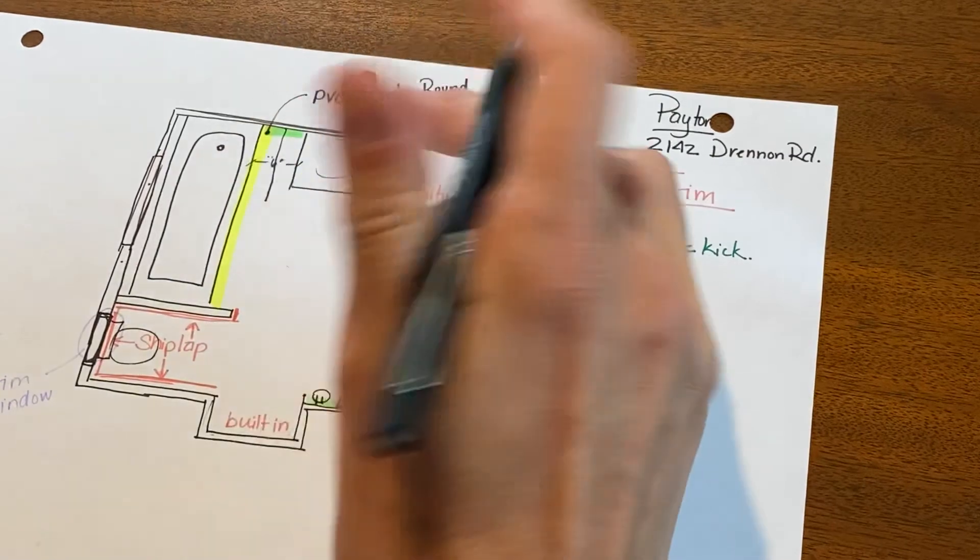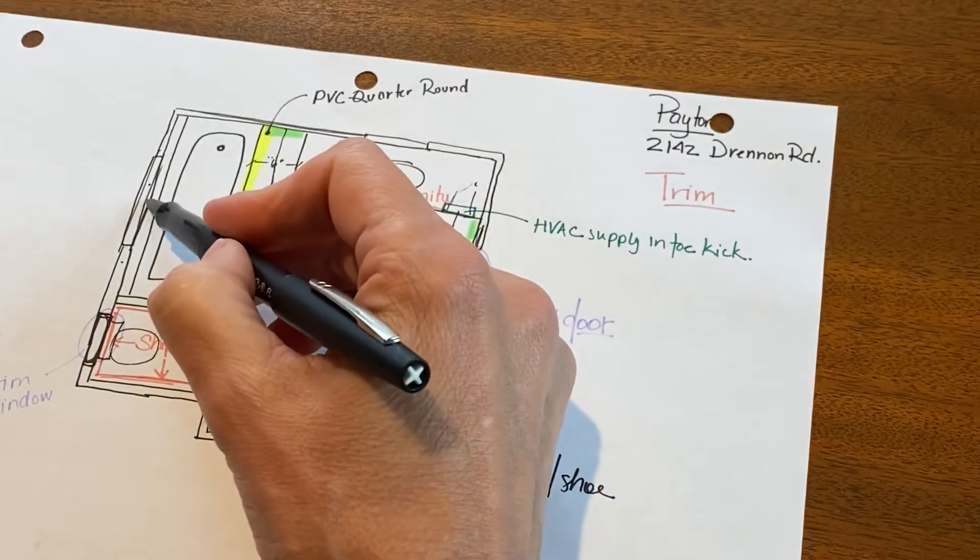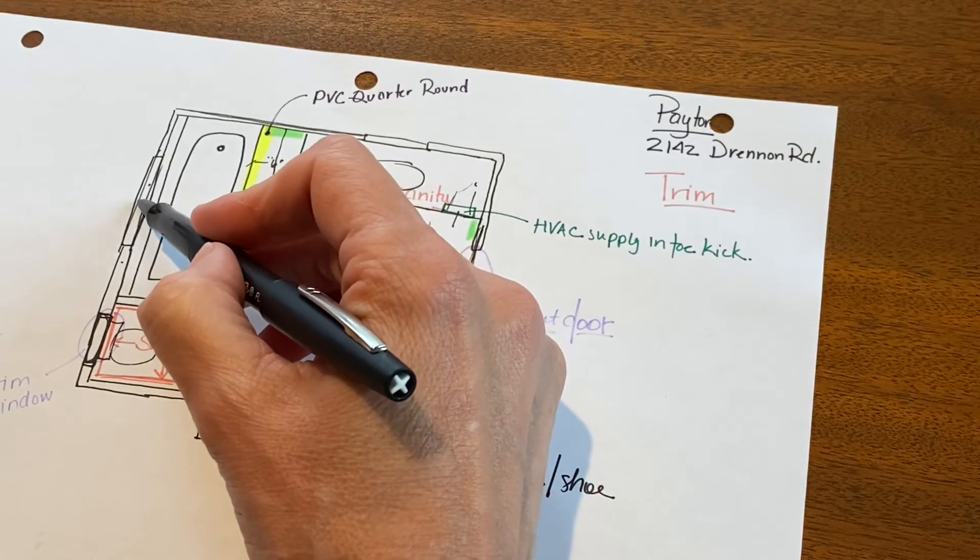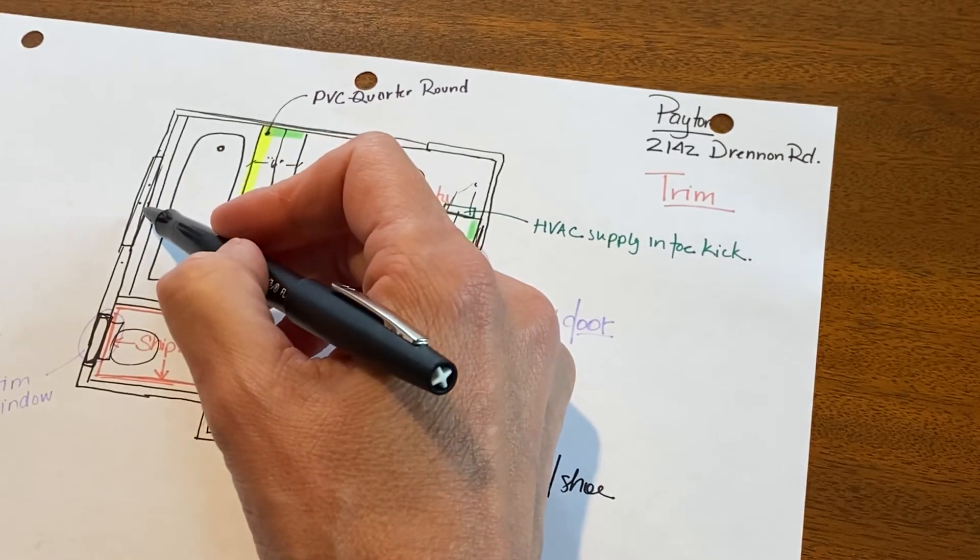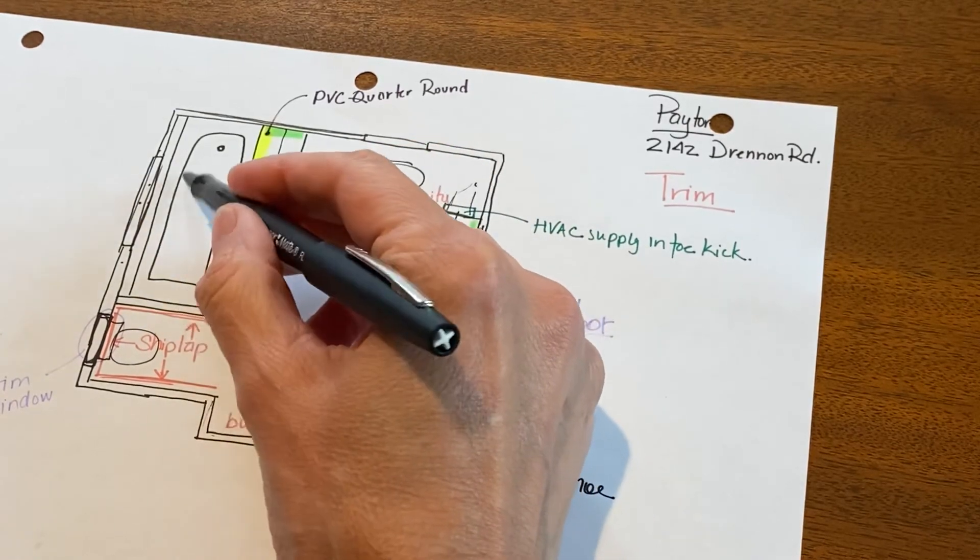They were going to vault the ceiling up to here, and they did do that, and it made it feel a lot more open and really nice. But only having seven feet at this outside wall, if I put a window in it, it would have really pushed down on us, so that wasn't going to work. So then I moved to putting in a skylight right here, which I would have loved that thought.